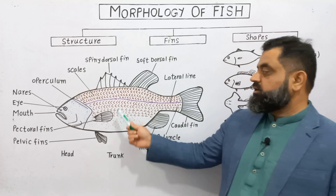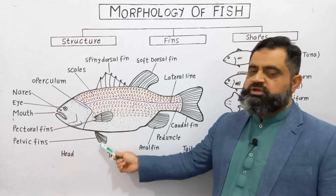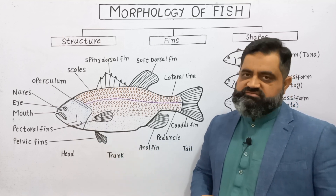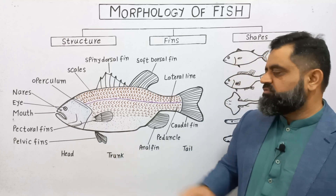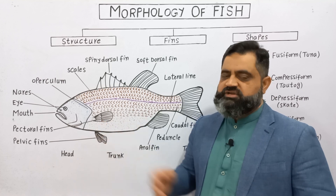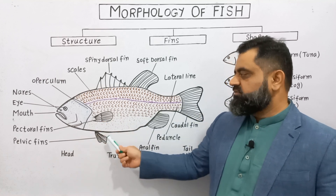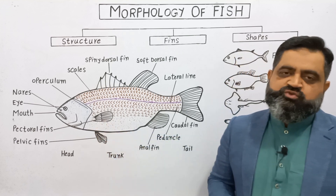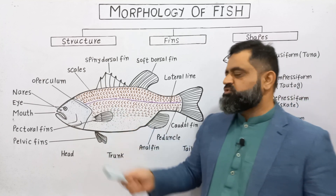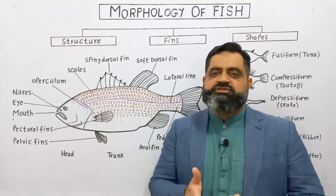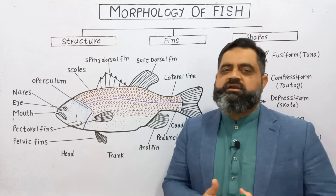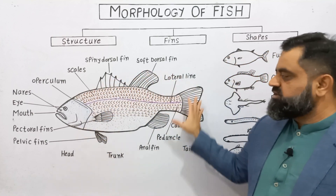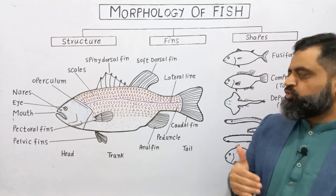Looking at the lateral, dorsal, and ventral sides of the body, there are two types of paired fins. One is known as pectoral fins and the other are known as pelvic fins. Pectoral fins are present on both the right and left sides of the body, and the pelvic fins are present on the ventral side attached to the belly. Both types of fins help to steer the fish in the water, allowing it to move towards the right or left side.